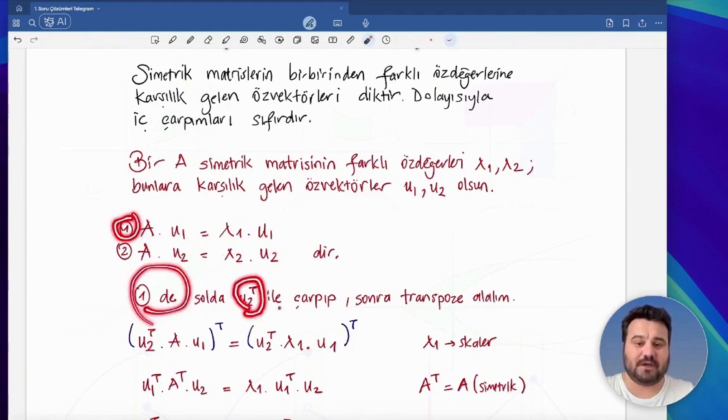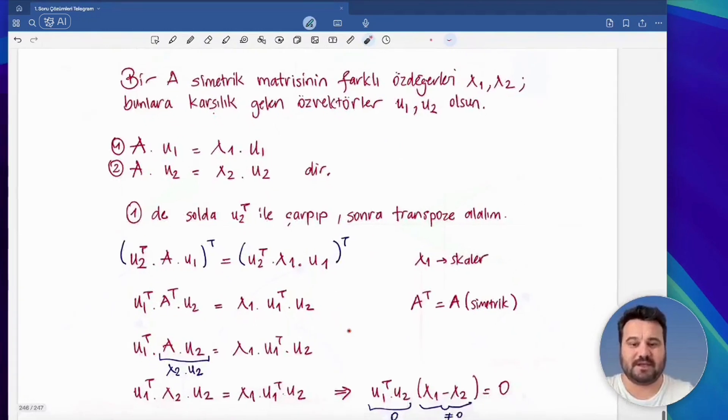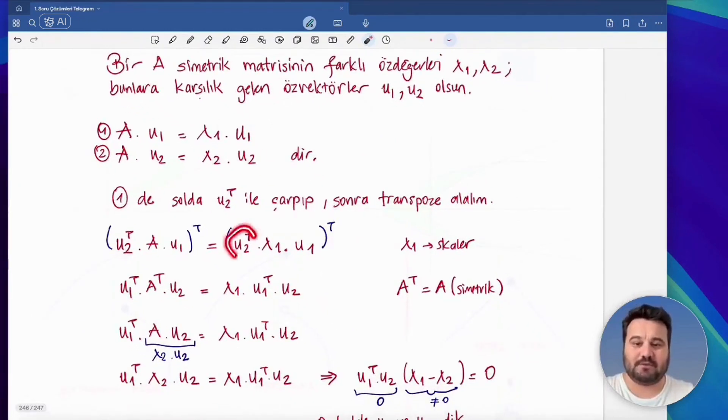Here, dear friends, we will multiply the first operation by the transpose vector of u2 and then take the complete transpose of both sides again. Look, we multiply this from the left. Then we took its transpose. How was the transpose of a multiplication taken? Everything's position was changing. These here are from left to right. Now, you need to change their position from right to left and write their transpose one by one. But this is the transpose of the transpose of two, it asks itself. On the right side, since lambda is a scalar, its transpose is equal to itself and can be written outside as a multiplication.